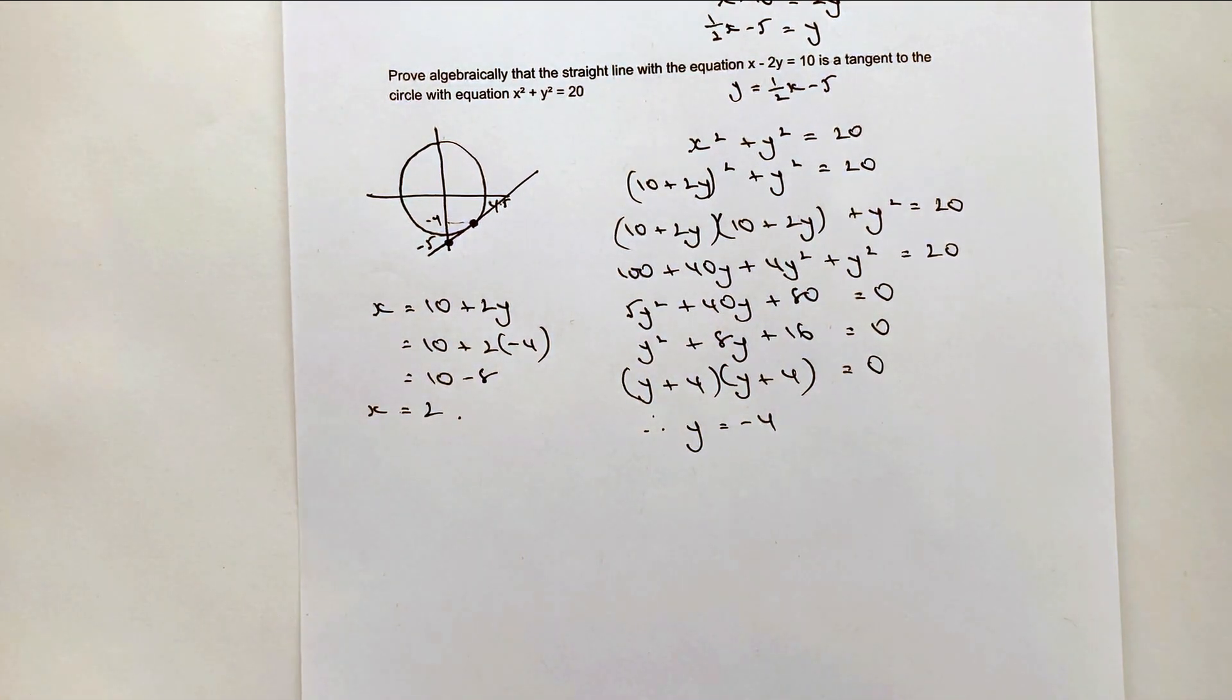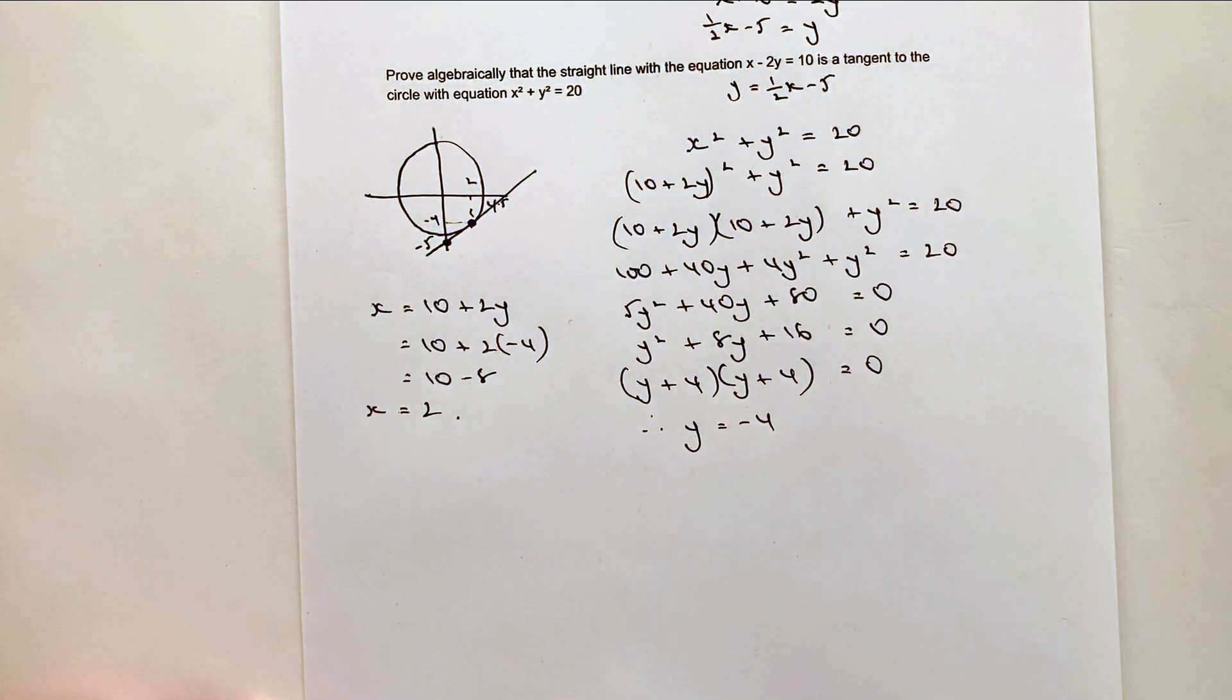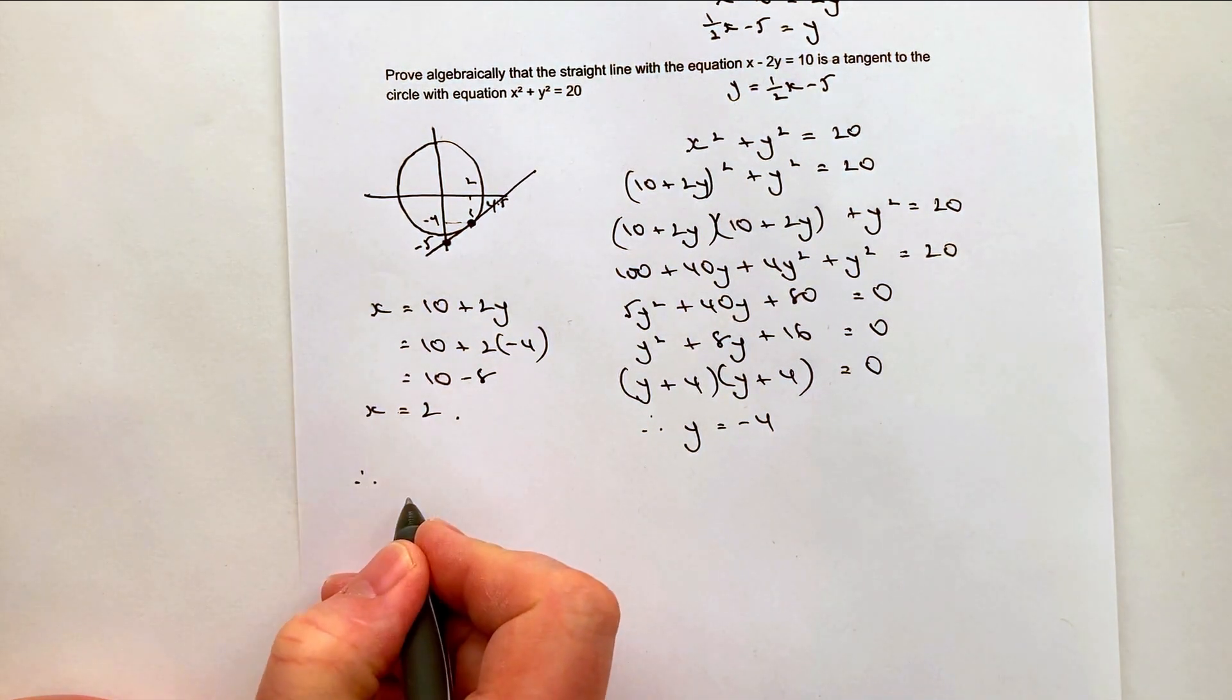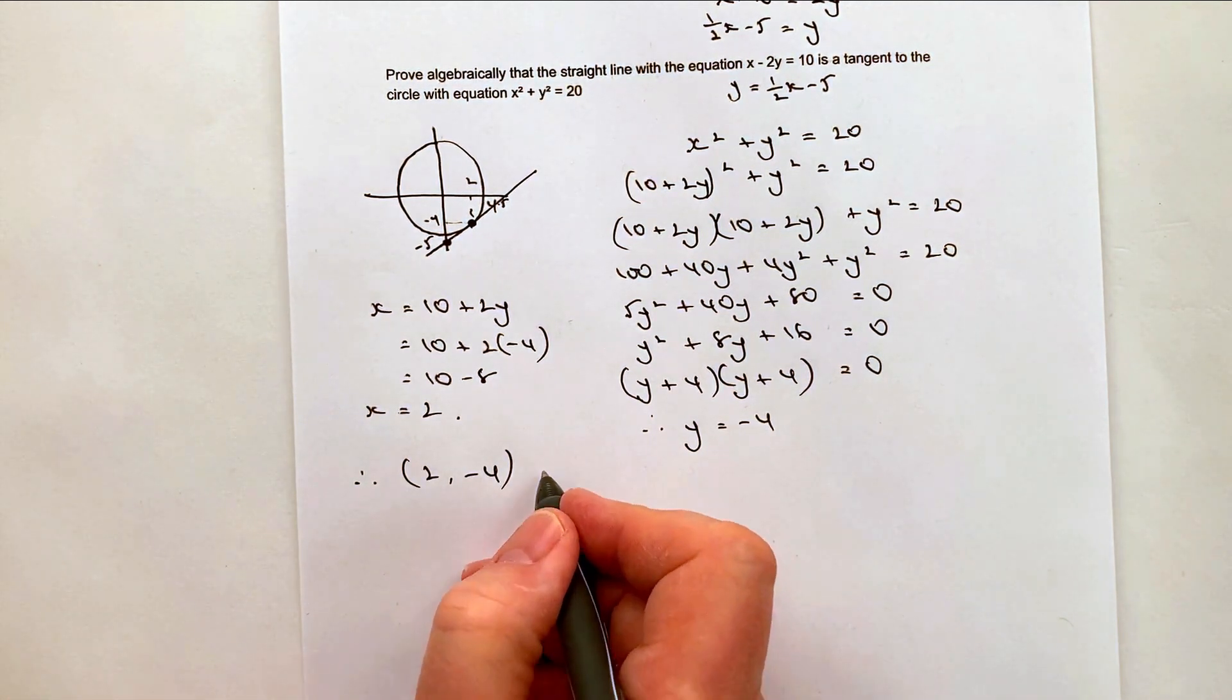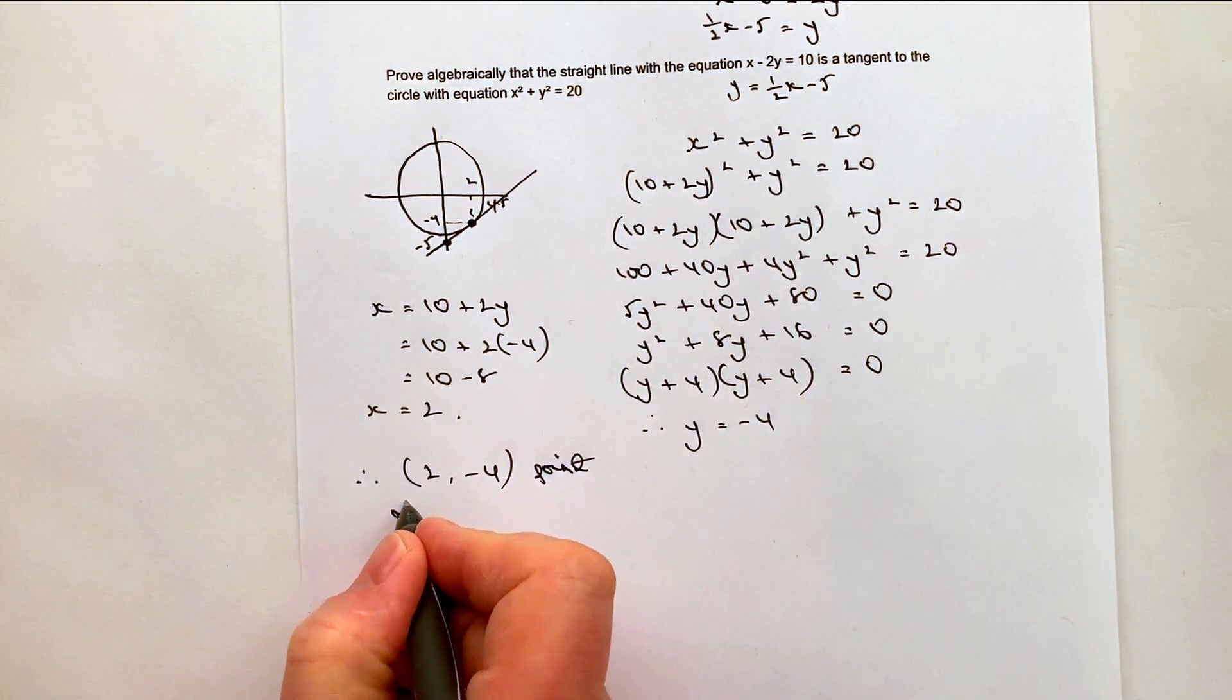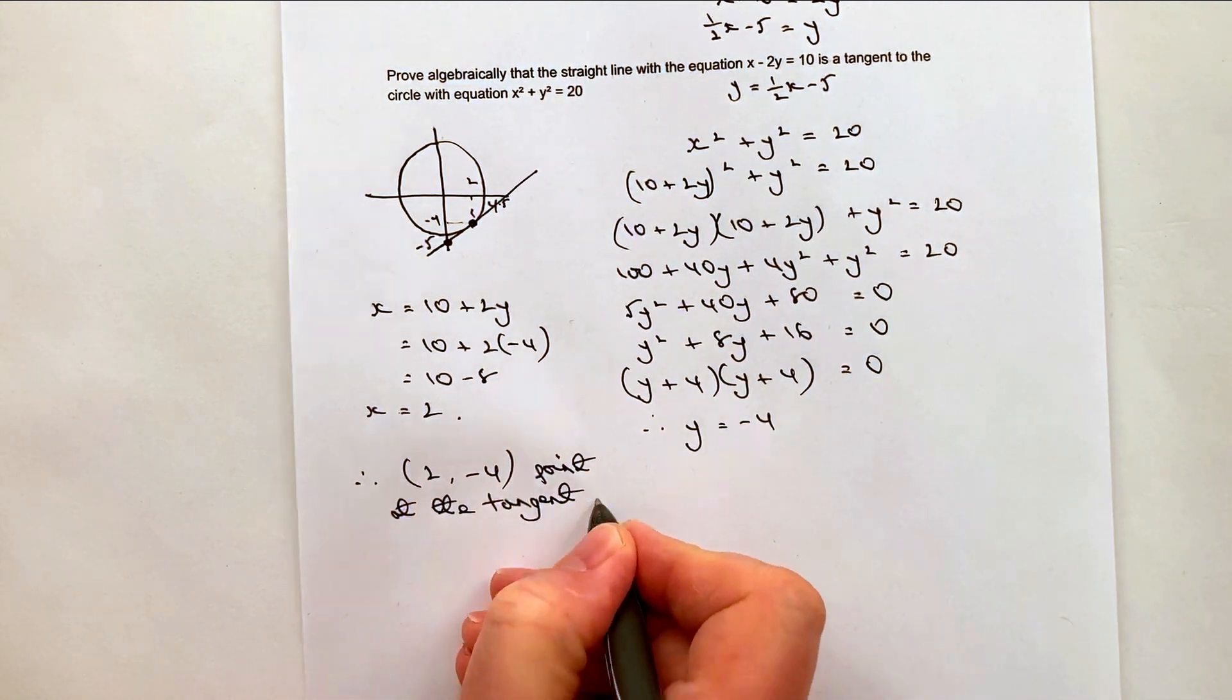So now I've got my two points where it meets at the tangent, which is going to be 2 for x and minus 4 for y. Therefore, it must be a tangent. I've put those three little dots mean therefore, (2, -4) is the point at the tangent. And that would be absolutely fine for this type of question.